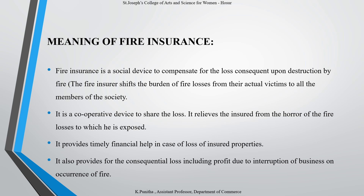It also provides for the consequential loss including profit due to interruption of business on occurrence of fire. Since it is not possible to predict the estimation of losses due to fire, insurance provides a fixed value compensation when the policyholder files claims, giving the maximum sum assured when you file your claim for fire insurance.